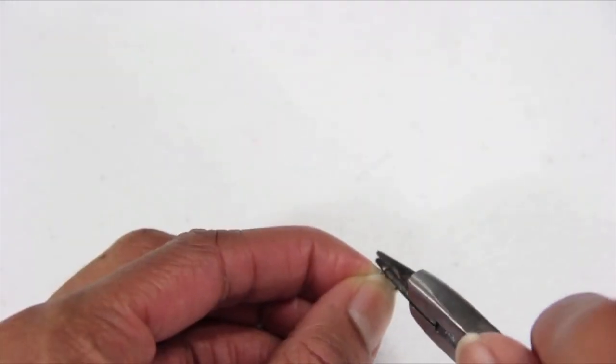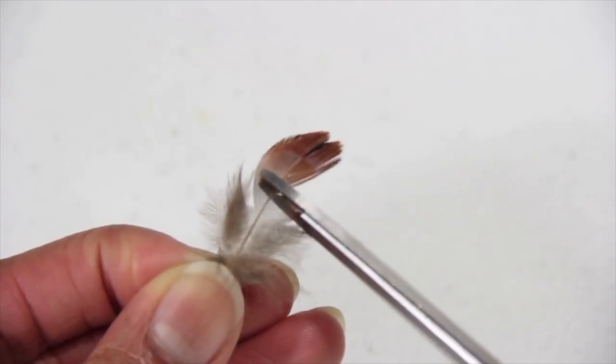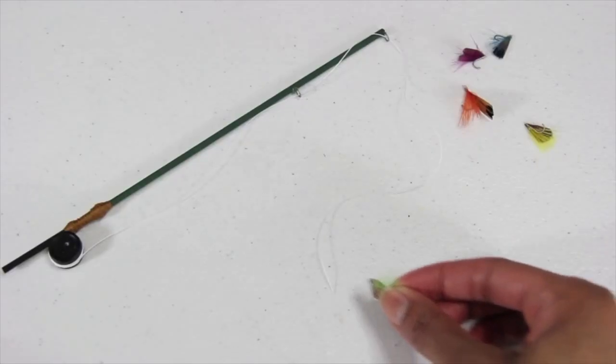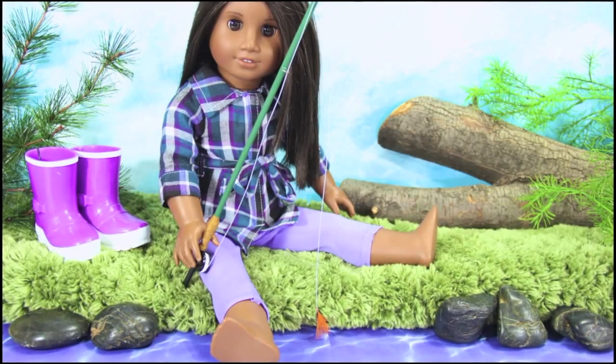To make a hook, I open the jump ring on one side, cut the tip off of a feather, then glue the feathers to the hook. Glue the hook to the end of the thread, and you're done. Happy crafting!